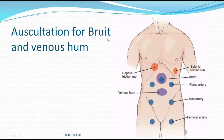Beyond bowel sounds, auscultation also involves listening for bruits, venous hum, or friction rubs. A hepatic friction rub occurs when there is inflammation on the surface of the liver — the inflamed surface rubs across the peritoneum, producing a rubbing sound over the right hypochondrium. A splenic friction rub occurs in case of inflammation of the spleen, heard over the left hypochondrium.